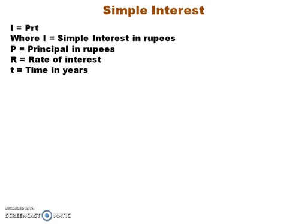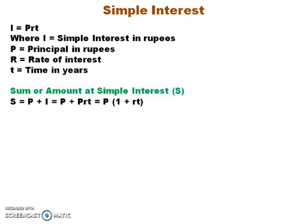The formula for computation of simple interest is I equals PRT, where I is simple interest in rupees, P is principal in rupees, R is rate of interest, and T is time in years. You can also find out the sum or amount denoted by S, where S equals P plus I. Substituting I equals PRT, you get S equals P into 1 plus RT.